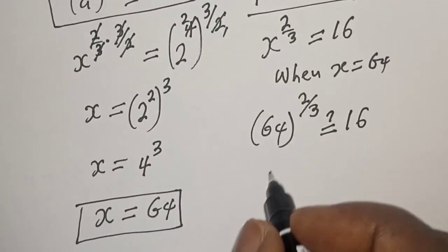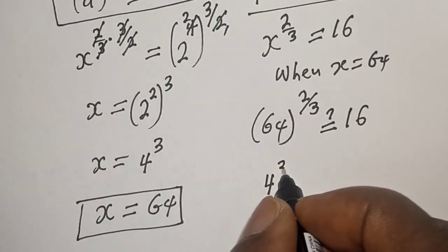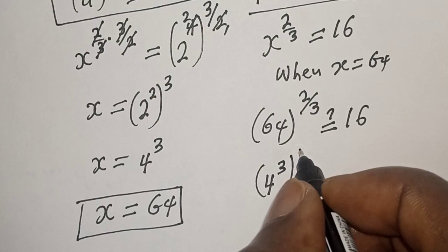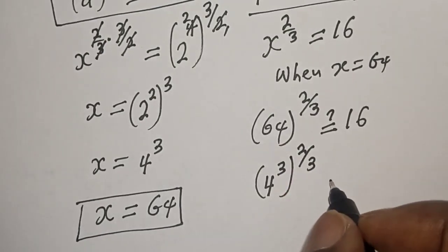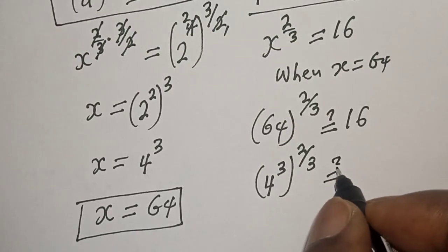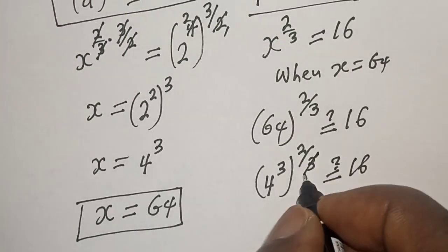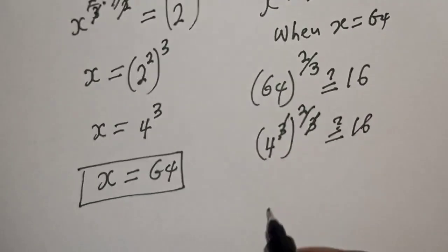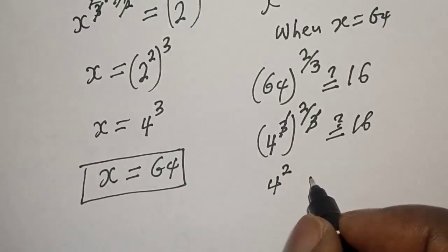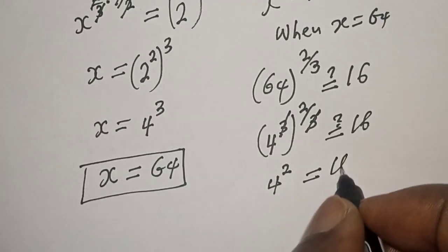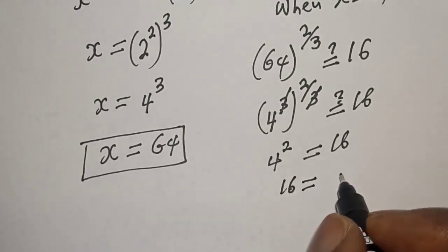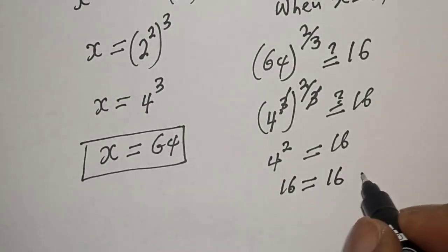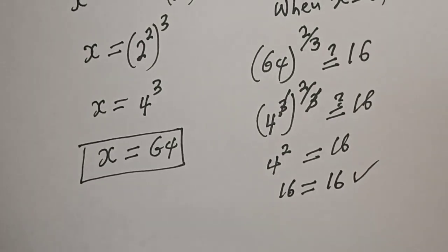64 is 4 raised to power 3 to the power of 2/3. 4 raised to power 2 must be equal to 16. This will cancel, and 4 squared is equal to 16. Therefore, the left-hand side 16 is equal to the right-hand side 16, and this satisfies the given equation.